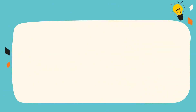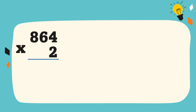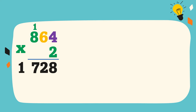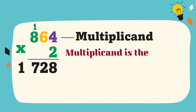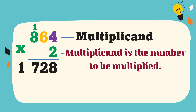Let's study the parts of multiplication. In this example, 864 is the multiplicand. Multiplicand is the number to be multiplied.